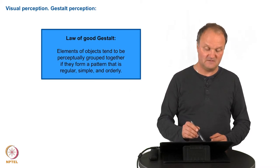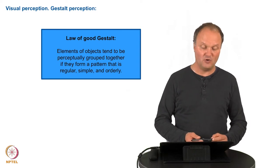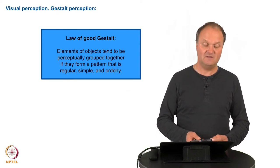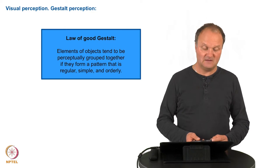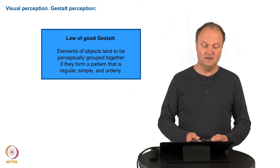And this can be summarized in the so-called law of good gestalt which says that elements of objects tend to be perceptually grouped together if they form a pattern that is regular, simple and orderly to the human perceiving test participant.